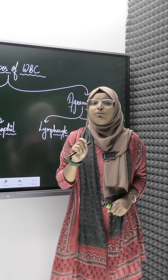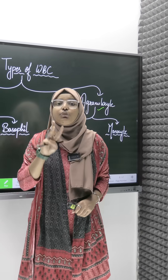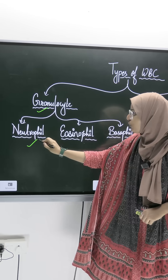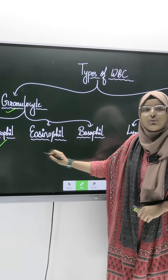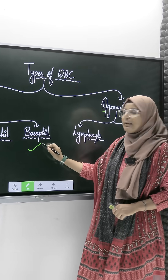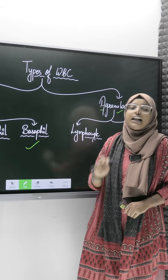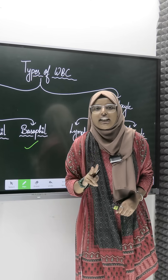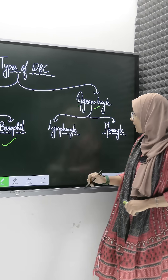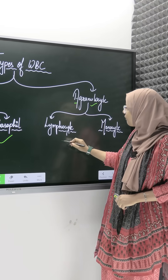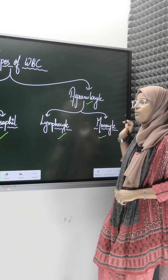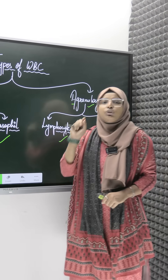How many types of granulocytes are there? There are three types: number one, Neutrophil; number two, Eosinophil; number three, Basophil. And in the agranulocyte category, we have two types of WBC: number one, Lymphocyte; and number two, Monocyte.